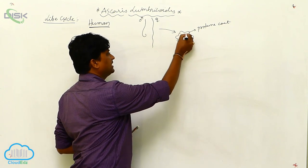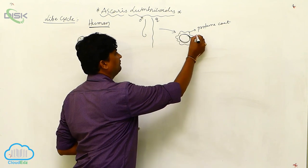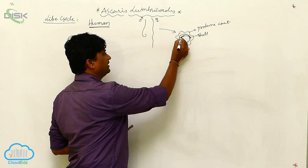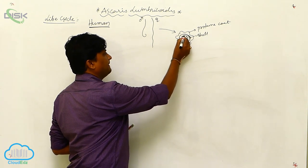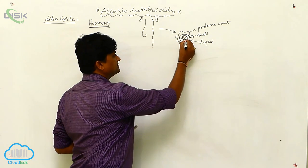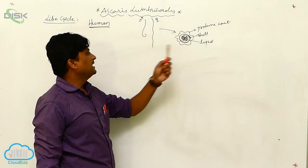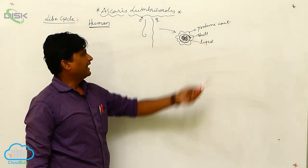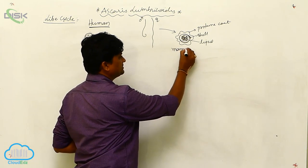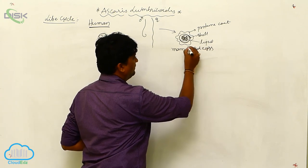Below the protein coat, there is a shell made up of chitin. Below the chitinous shell, there is a lipid coating. This special arrangement of layers on the egg is what we call mamillated eggs.